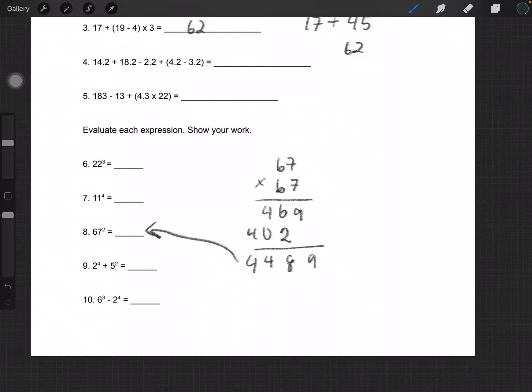For number 6, you would multiply it like this, and whatever you get, you'd multiply it by 22 again. Same thing with number 7. Then for numbers 9 and 10, you do these separately and then add it all up together.